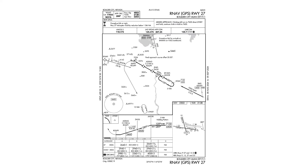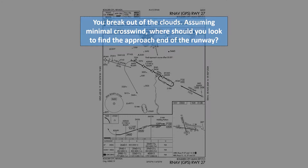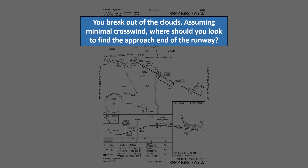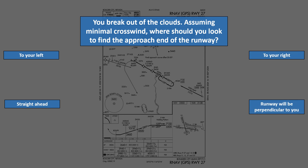For the next question, let's say you break out of the clouds. Assuming minimal crosswind, where should you look to find the approach end of the runway? To your left? To your right? Straight ahead? Or the runway will be a line perpendicular to you?